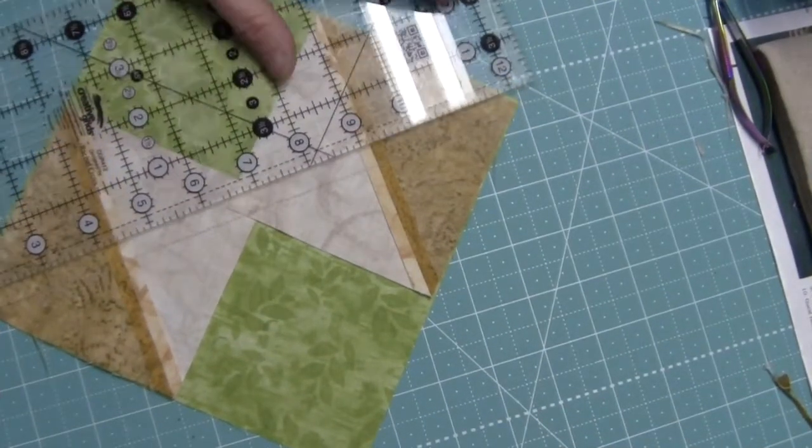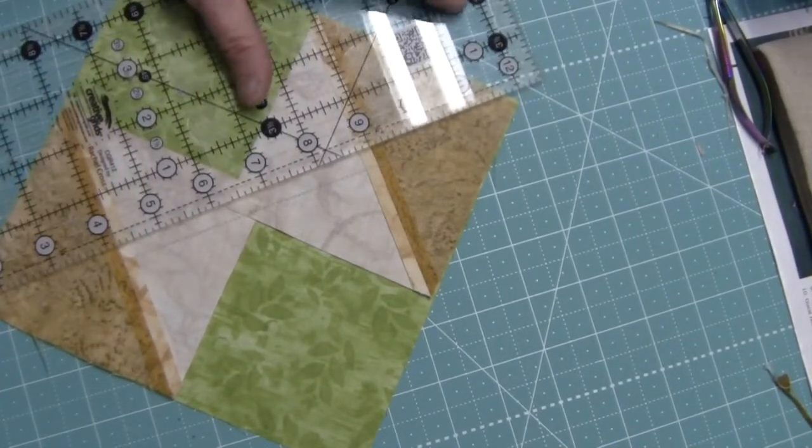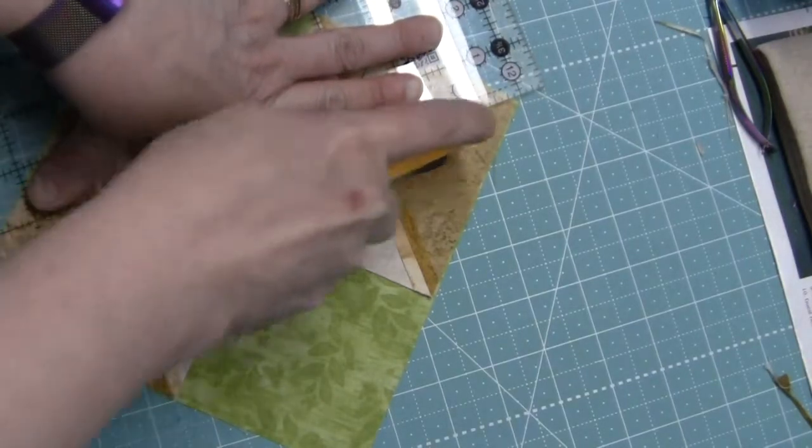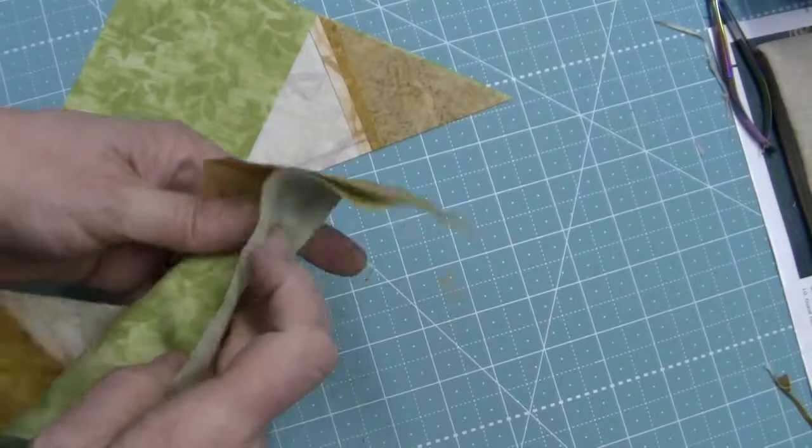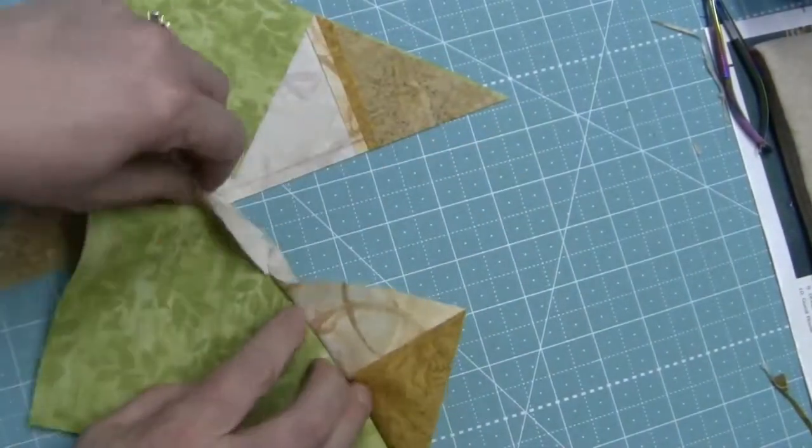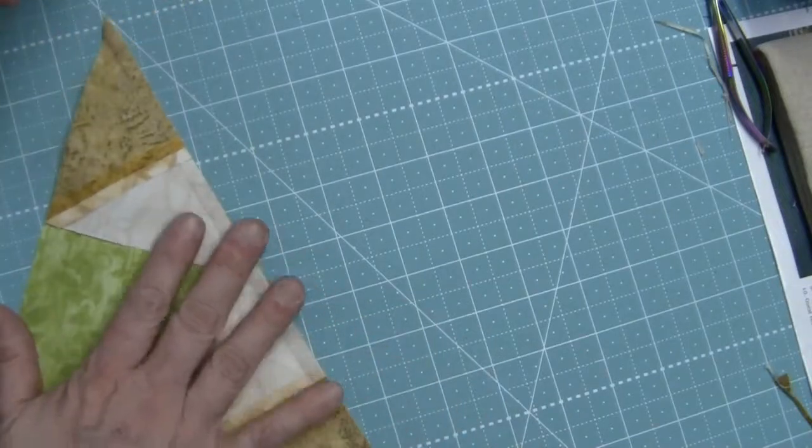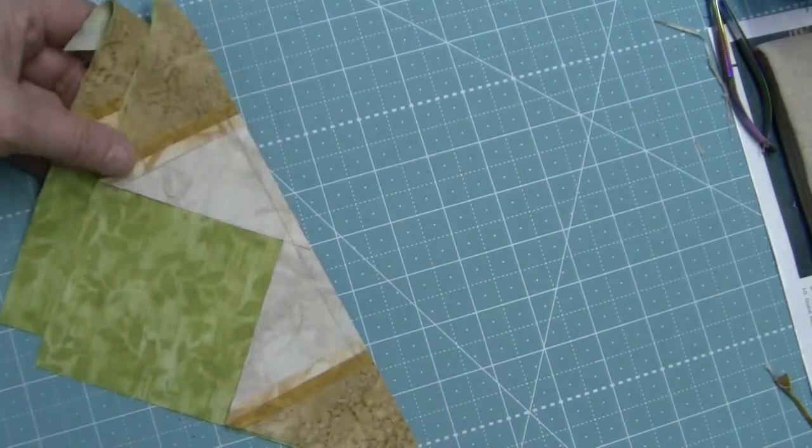Now we're just going to slice this down the middle between the two lines of stitching. I'm going to take these over and I'm going to press these away from the fabric B large square.